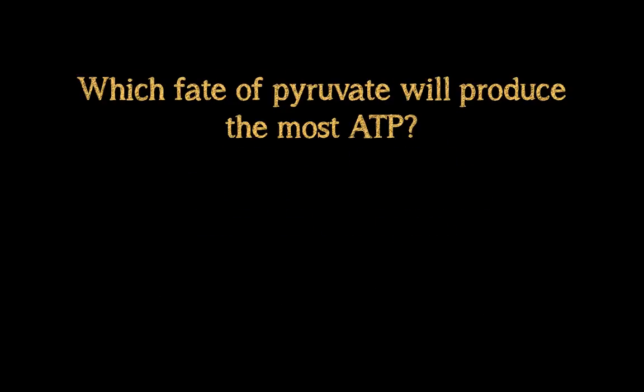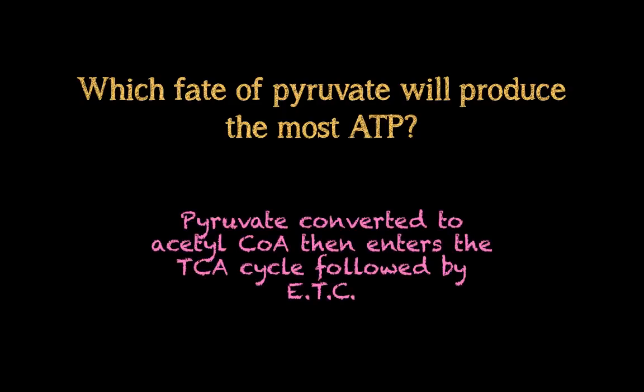Which fate of pyruvate will produce the most ATP? You've just given three fates of pyruvate, and the question asks which one of those three produces the most ATP. The answer: pyruvate converted to acetyl-CoA, which then enters the TCA cycle followed by the electron transport chain — that will generate the most amount of ATP.